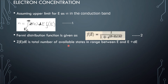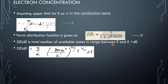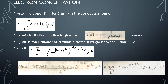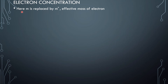Z(E) dE is the total number of available states in the range between E and E + dE. Hence, Z(E) dE = (π/2) · (8m*/h²)^(3/2) · E^(1/2) dE, which can also be written as (4π/h³) · (2m*)^(3/2) · E^(1/2) dE. Here, the energy E is replaced by E - Ec, where Ec is the bottom of the conduction band, and m is replaced by m*, the effective mass of the electron.